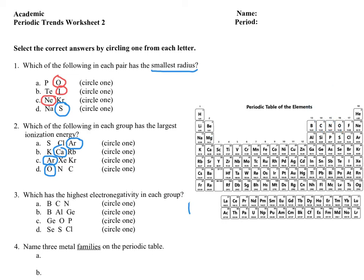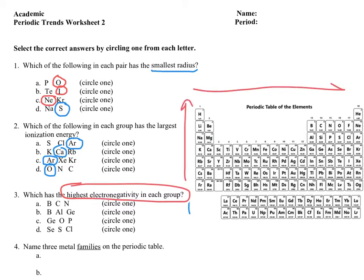The next question focuses on which has the highest electronegativity in the group. As you go up the periodic table and over toward fluorine, electronegativity increases — fluorine is the most electronegative element. With electronegativity, we ignore the noble gases since they're happy and stable with their eight valence electrons. For boron, carbon, and nitrogen: since nitrogen is furthest to the right, it has the most electronegativity.